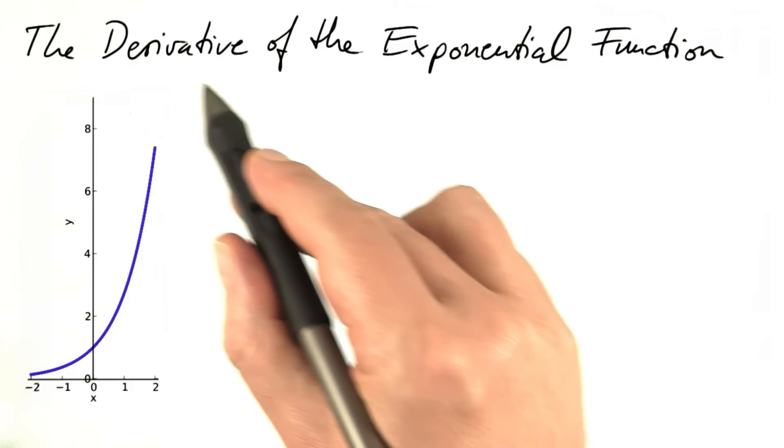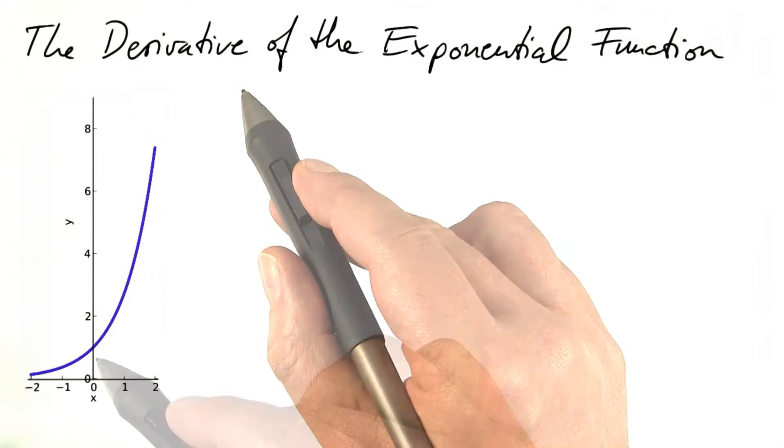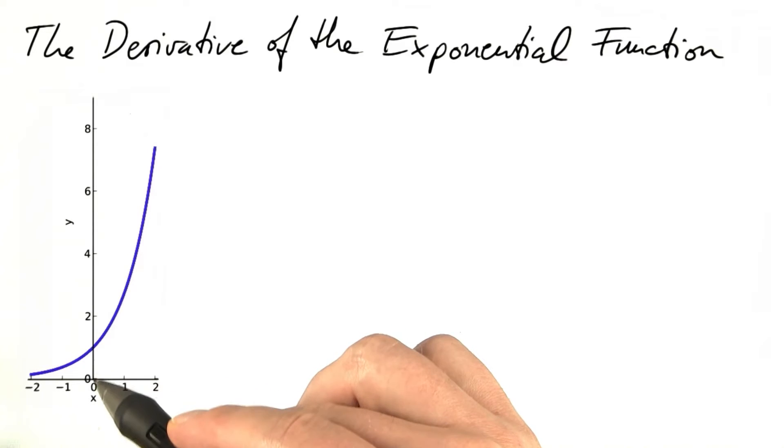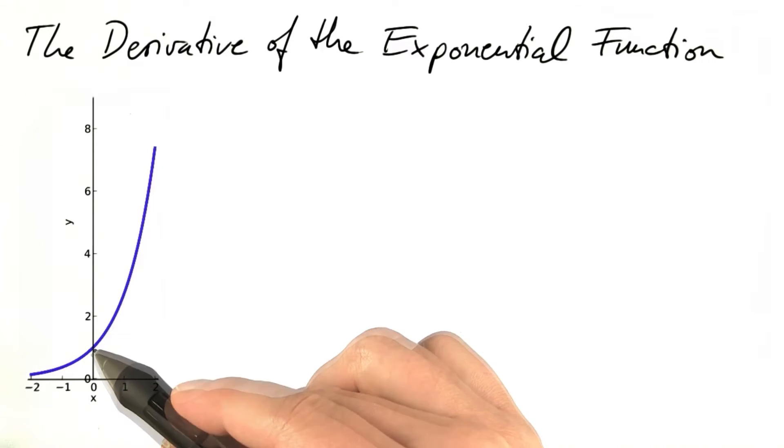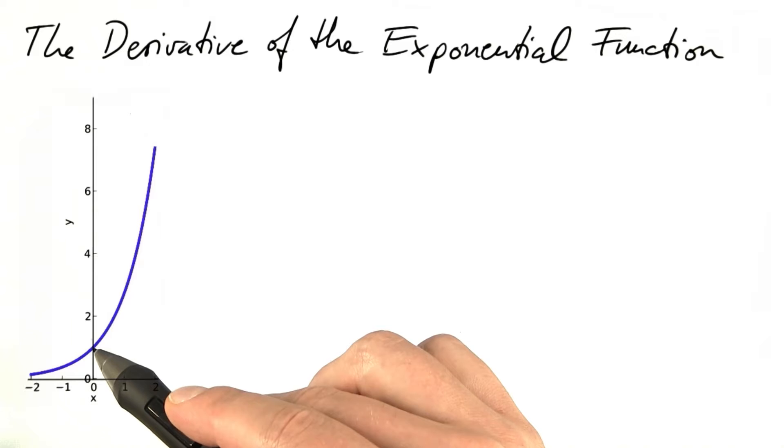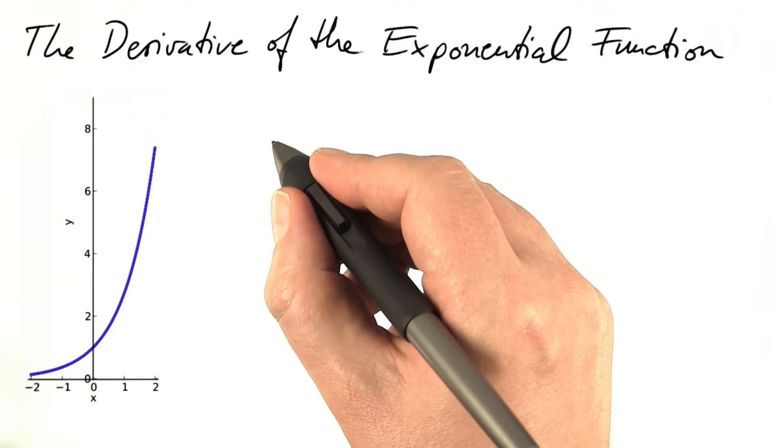Now it's about time to compute the derivative of the exponential function. We already know one value. The derivative of the exponential function at x equals 0 is 1, because the slope of the tangent line is 1, which was our definition of the exponential function. Everything else can be derived from that.